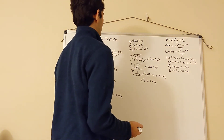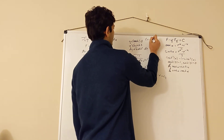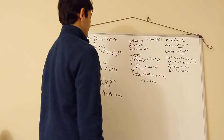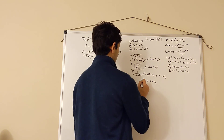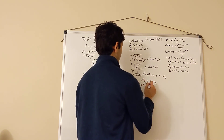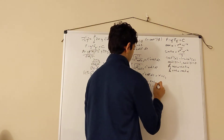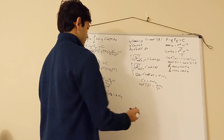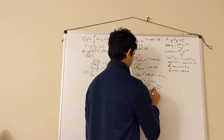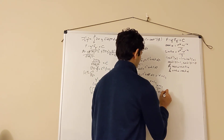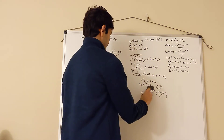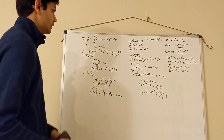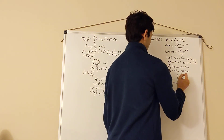Back-substituting t = cosh⁻¹(y/c'), we get cosh⁻¹(y/c') = (x + c₂)/c'. Taking the hyperbolic cosine of both sides and multiplying by c' gives the final answer: y = c'·cosh((x + c₂)/c'). Renaming c' as c₁, this shape is known as a catenary.